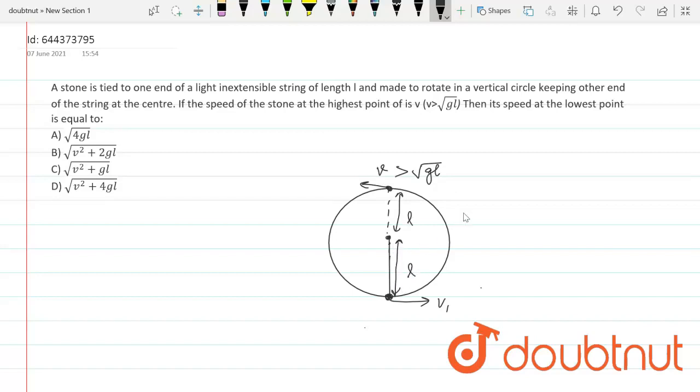So we can conserve the mechanical energy here. In this particular system, if I consider this as the datum level, that means the potential energy due to gravity at this position, I'm assuming to be 0, then the potential energy at the highest level can be written as MG into 2L.